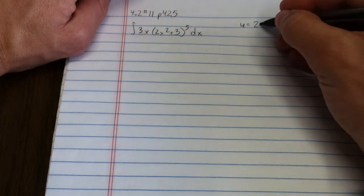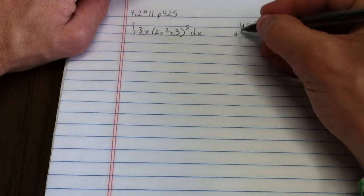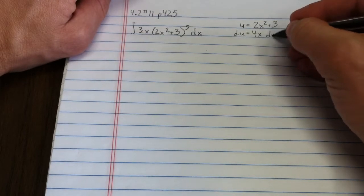So, let's try that u: 2x squared plus 3. That makes du equal to 4x plus 0 dx.